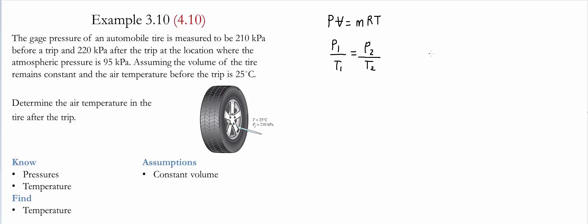If this is the case, then we substitute the values. Notice that for ideal gas law, all the values must be in absolute values. Therefore, we have P1, which is originally 210 kilopascals. We add the atmospheric pressure, which is 95 kilopascals, to give us a value of 305 kilopascals.